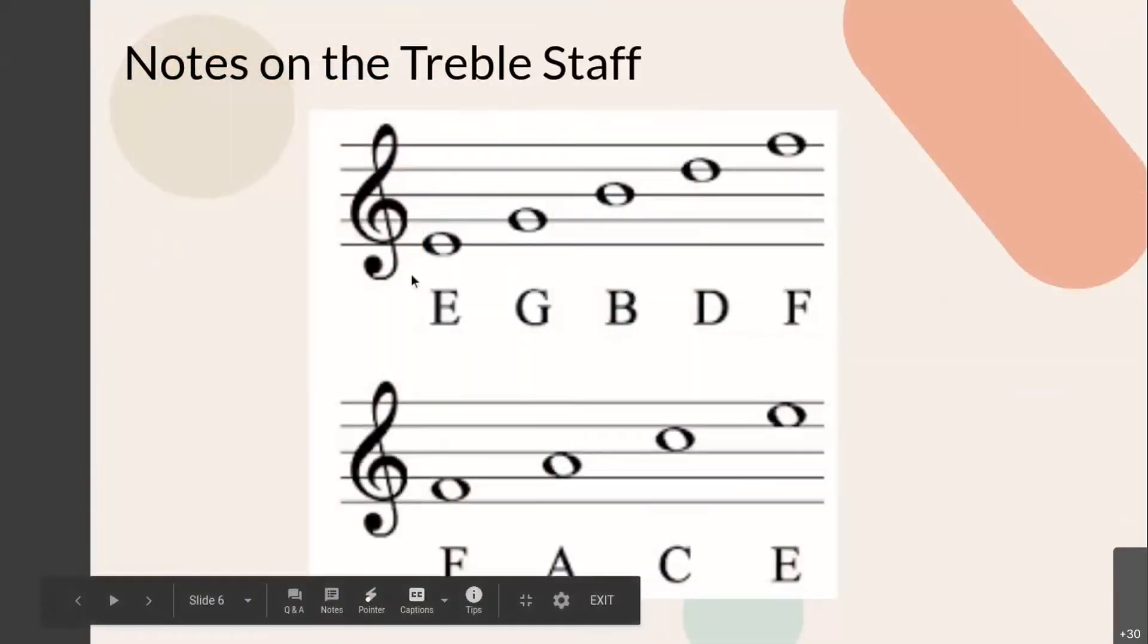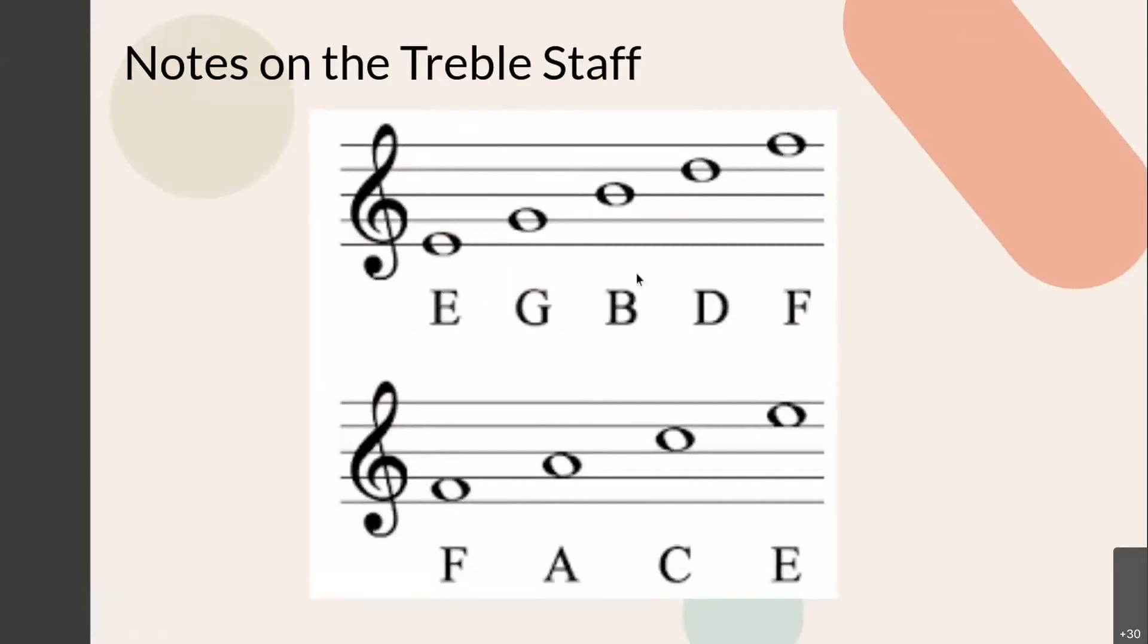Okay, so now here are some notes on the treble staff. So starting from the bottom to the top, you always start bottom to the top. On the lines, we have E, G, B, D, and F. And in the spaces, you have F, A, C, E.